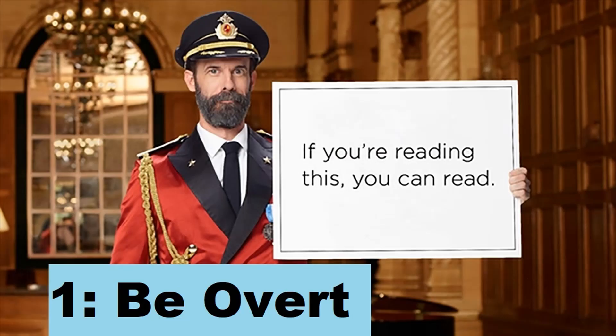Number one: be overt about what's happening. People like to know what they're getting into. This applies to kids in a classroom and people at a gaming table. The second someone starts going, 'what are we doing,' you've already lost them. By all means, have mystery, have intrigue — that stuff is fun — but you don't want people mired in confusion.